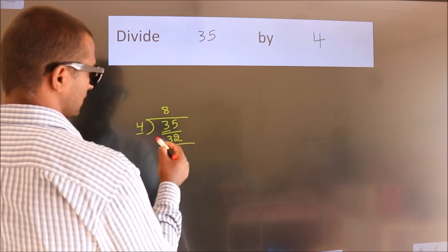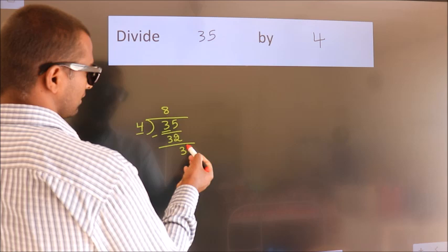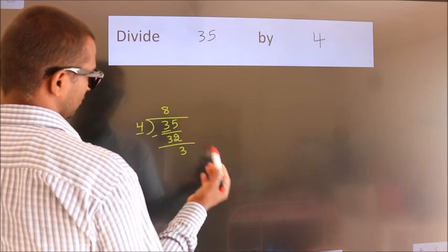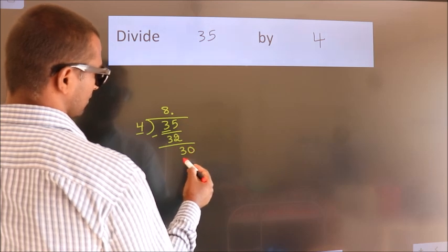Now we should subtract. We get 3. After this, there are no more numbers to bring down. So what we do is put a dot and take 0. So 30.